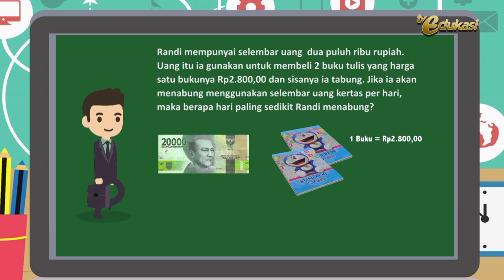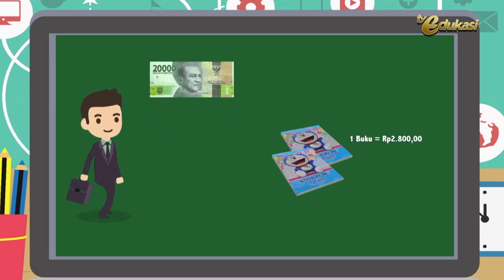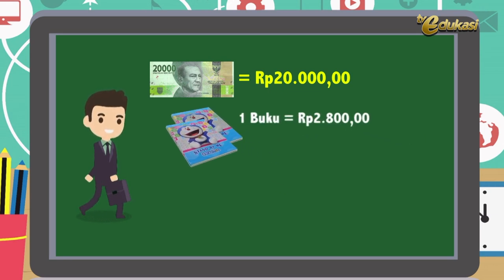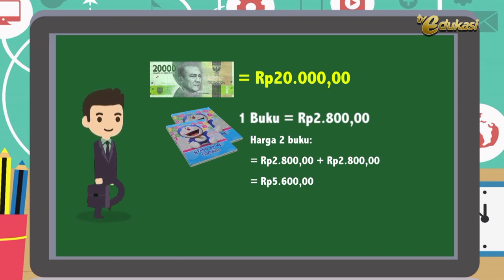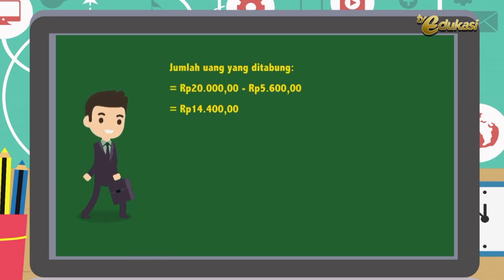Soal ini menarik ya. Mari kita lihat jawabannya. Informasi: uang yang dimiliki Randi Rp20.000, harga satu buku tulis Rp2.800. Rp2.800 ditambah Rp2.800 sama dengan Rp5.600. Berarti jumlah uang yang ditabung oleh Randi adalah uang mula-mula dikurangi uang yang dikeluarkan untuk membeli buku tulis. Atau, Rp20.000 dikurangi Rp5.600, sama dengan Rp14.400.